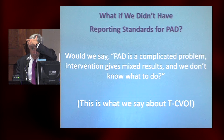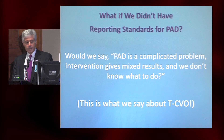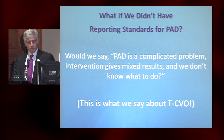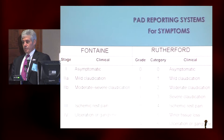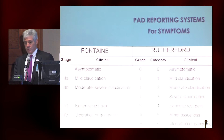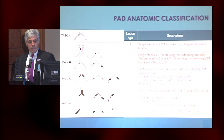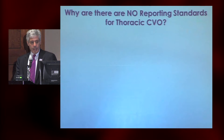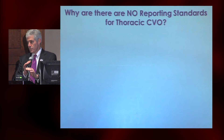What if we didn't have a way to report peripheral arterial disease? We'd say peripheral arterial disease is a complicated problem, intervention gives mixed results, and we really don't know what to do. Well, that's what we say about thoracic central venous obstruction. Fortunately, in peripheral arterial disease we have ways to categorize the patient's presentation — initially the Fontaine system, then Rutherford. We have anatomic classification such as the TASC system, giving us a great way to characterize patients. But thoracic central venous obstruction has no reporting standards.